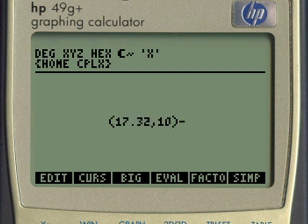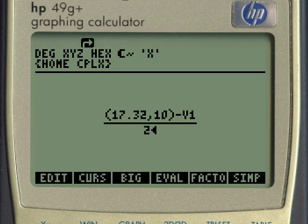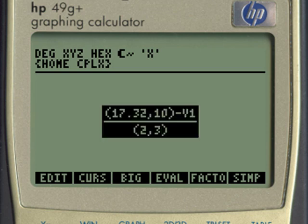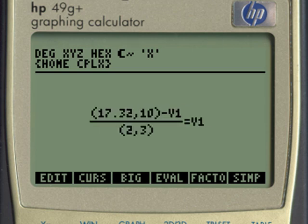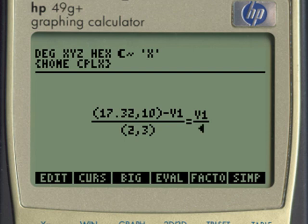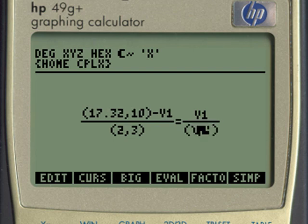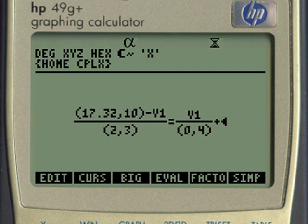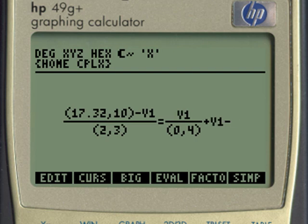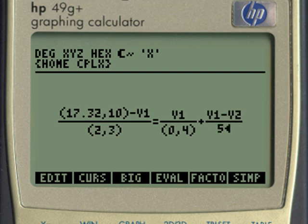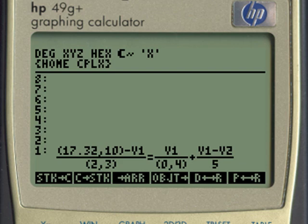minus key, it knows that I'm continuing outside the parenthesis. Minus V1, highlight the whole thing. Divide by 2, J3, and then highlight the whole thing. And that is equal to V1 divided by 0, J4. Highlight. Plus V1 minus V2 divided by 5. And that is our first equation, the equation of KCL1.